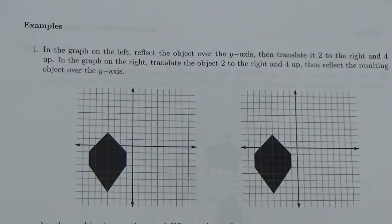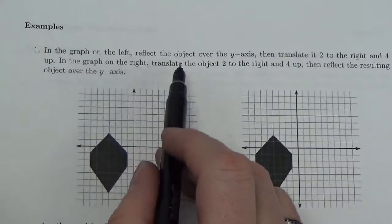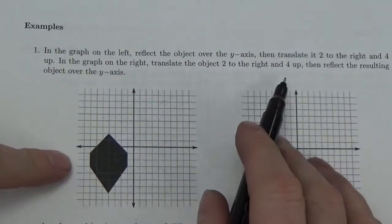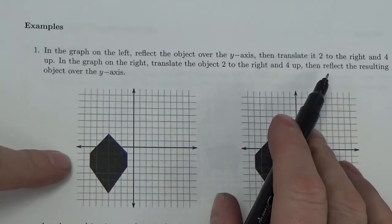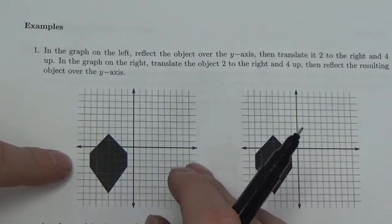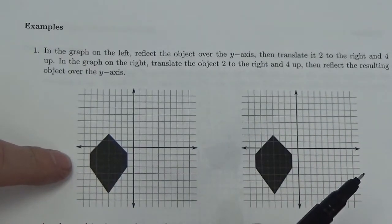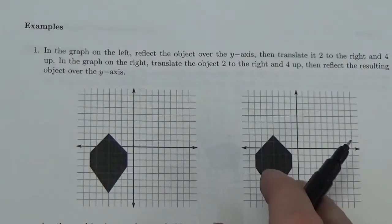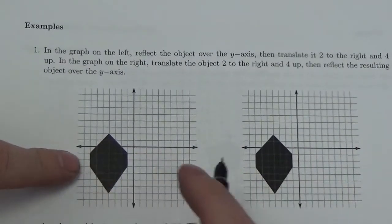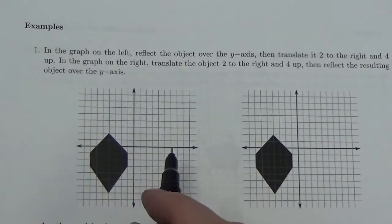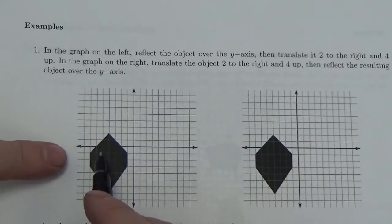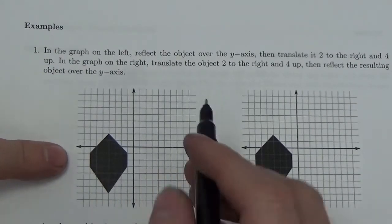For this question, it says: in the graph on the left, reflect the object over the y-axis, then translate it two to the right and four up. So first we're going to reflect the object over the y-axis.